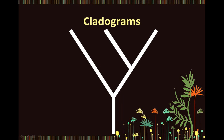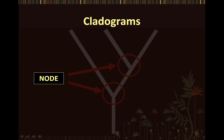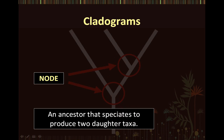Let's discuss the parts of a typical cladogram. On a cladogram, a node represents an ancestor that has speciated to produce two daughter taxa. Graphically, it is represented as a point from which two branches arise.